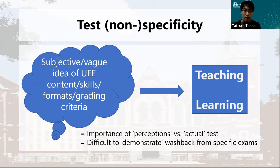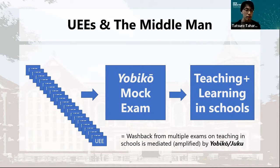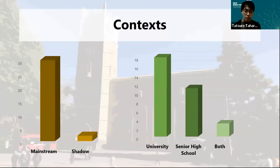The results support previous washback studies showing the importance of perception versus actual test. Moreover, it is difficult to demonstrate washback from specific exam UEEs. The middlemen that facilitate the test specificity issue in Japan are Yobiko (preparatory schools) and Juku (cram schools), which create mock tests that many high school students take. This test content reflects questions from in-house tests by famous universities. That is, washback from multiple exams on teaching in schools is mediated or amplified by Yobiko — the shadow education. Regarding the context of education, most research is connected with mainstream education, with only few studies exclusively focusing on shadow education, despite its importance in Japan.